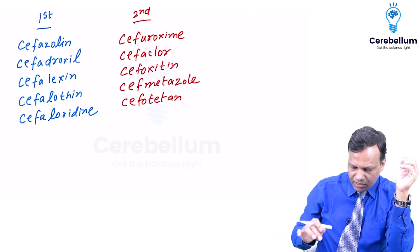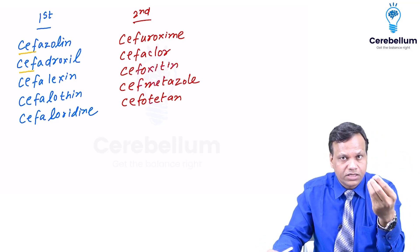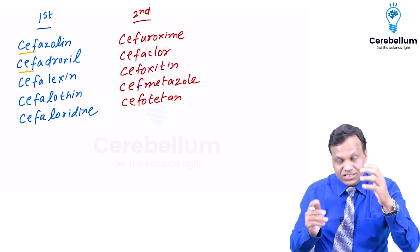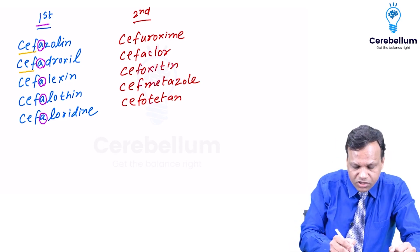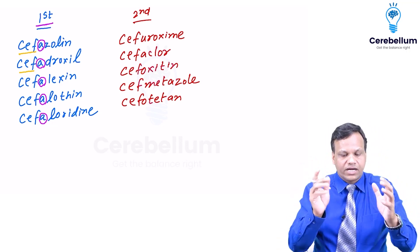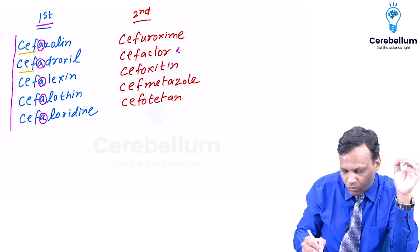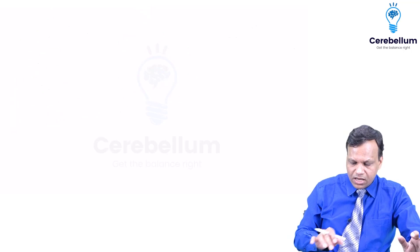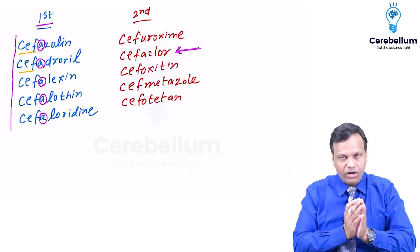Now, an important observation: almost all of these drugs start with 'cef', making it hard to remember which drug belongs to which generation. The first rule is: if the name starts with 'cefa', it is first generation, because 'a' is the first letter. There is one exception — cefaclor starts with 'cefa' but is second generation. All other 'cefa' drugs are first generation.